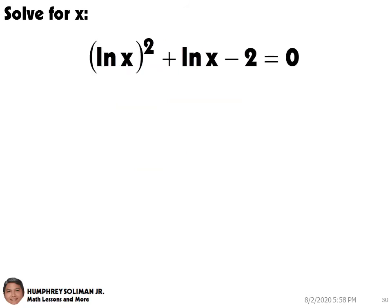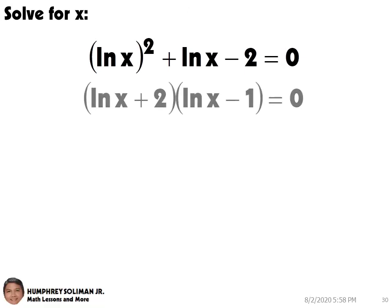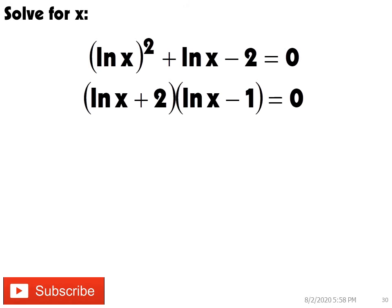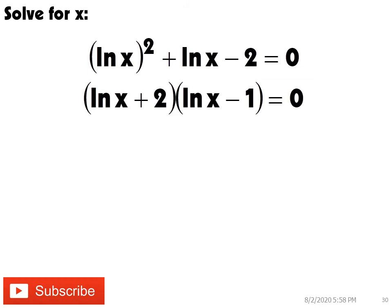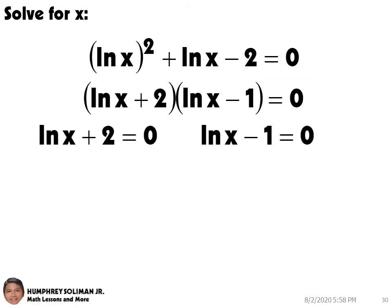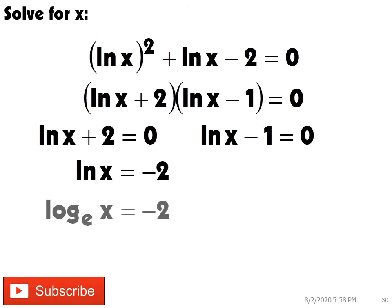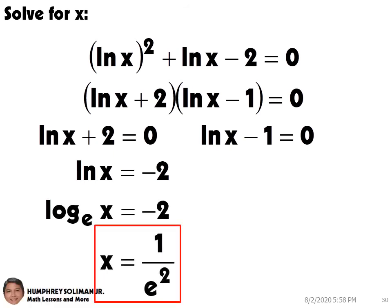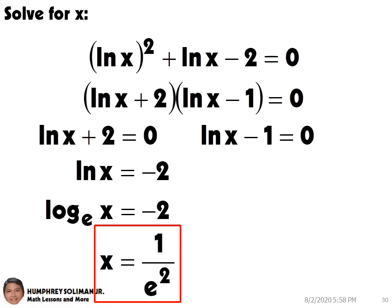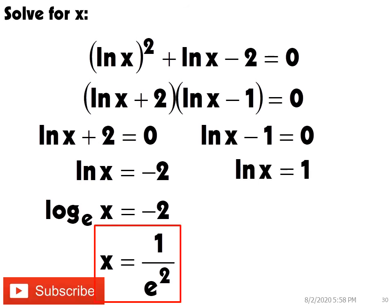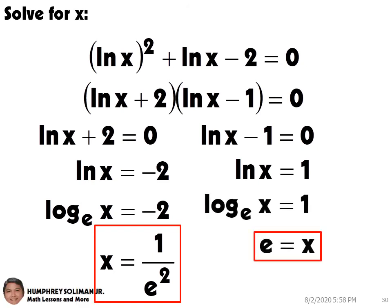Let's try another example. We have here a logarithmic equation that resembles a quadratic equation. Here, we can write the quadratic in factored form: the quantity ln x plus 2, times the quantity ln x minus 1, equals 0. Solving ln x plus 2 equals 0, we can get ln x equals negative 2. Simplifying, this will be x equals 1 over the square of the constant e. And, solving ln x minus 1 equals 0, we can get ln x equals 1. Simplifying, this will be x equals the constant e.